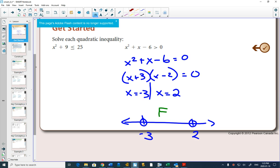What if I try something bigger than 2? I try 3. 9 + 3 is 12 - 6 is 6. Is that bigger than 0? True. I try something less than negative 3. Negative 4. 16 - 4 is 12 - 6 is 6. Bigger than 0? Yes. True.